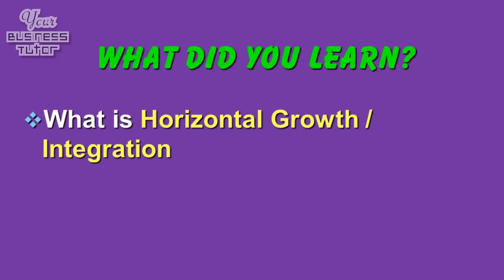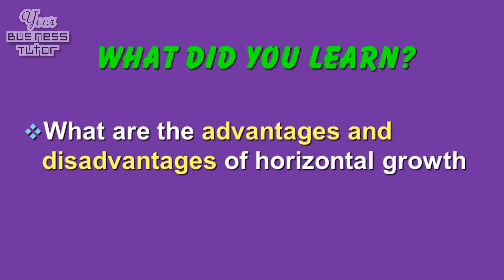So what did we learn in this presentation? We found out what horizontal growth or integration is, and then we found out about the advantages and disadvantages of horizontal growth. Horizontal integration is a popular form of external growth as it involves joining together with another business that does similar things. However, sometimes organisations believe it might be better to combine with a supplier or a business they sell their products to. So let's move on to our next presentation in this series and look at vertical growth.